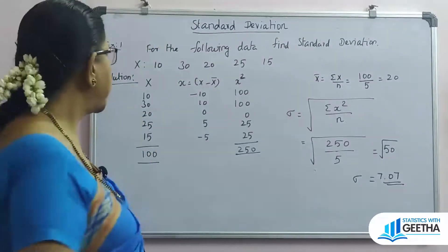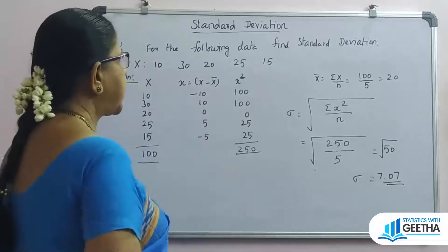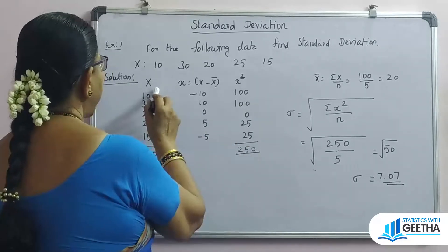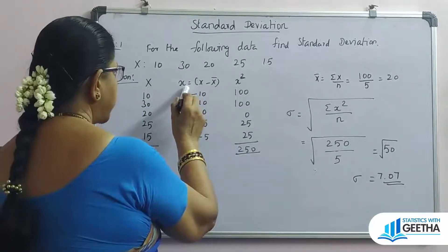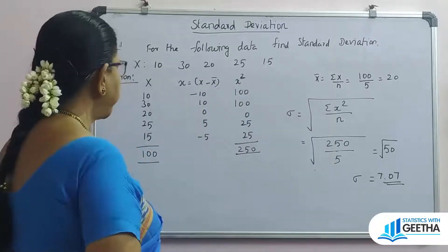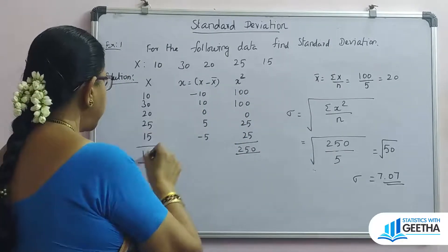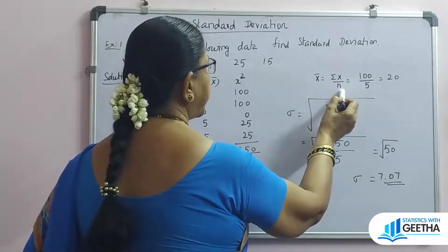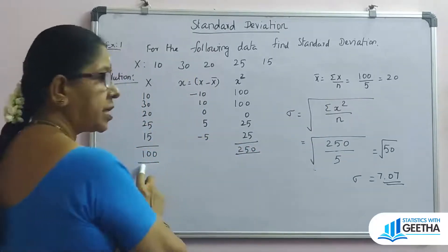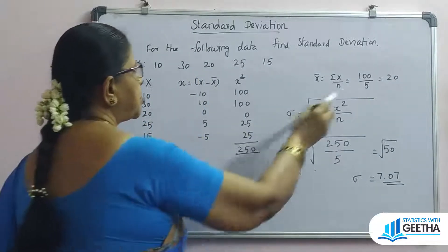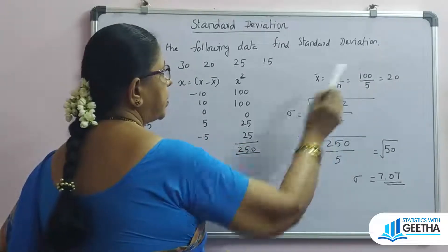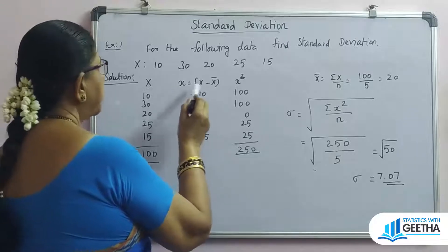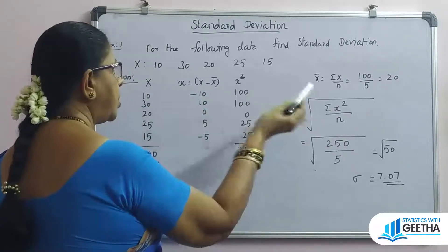For the individual series problem: find the standard deviation of the following data — given x values. You form a table with columns x, small x (which is x minus x-bar), and small x squared. First, find summation x, then x-bar equals summation x divided by n. Summation x is 100, divided by 5 observations, so x-bar equals 20.